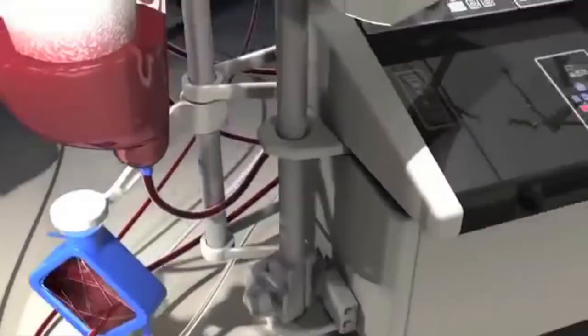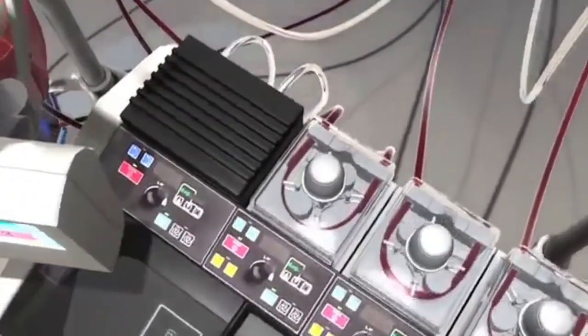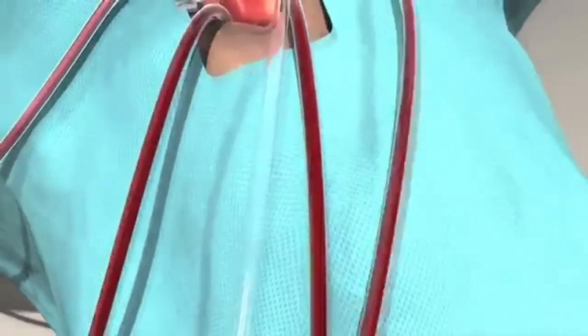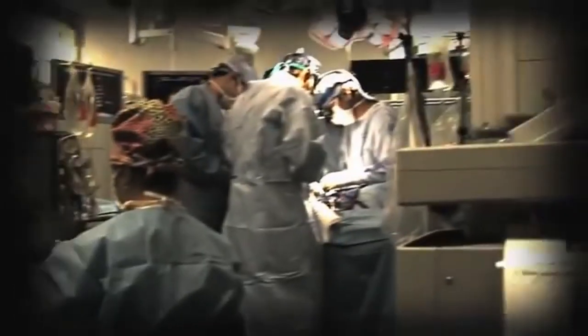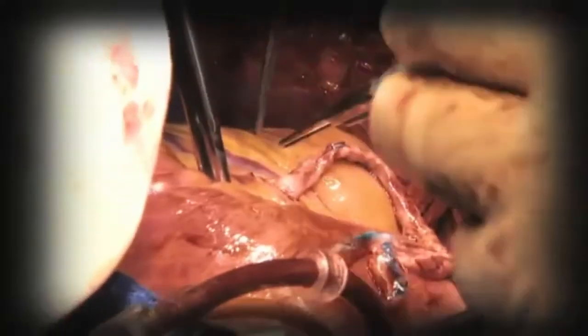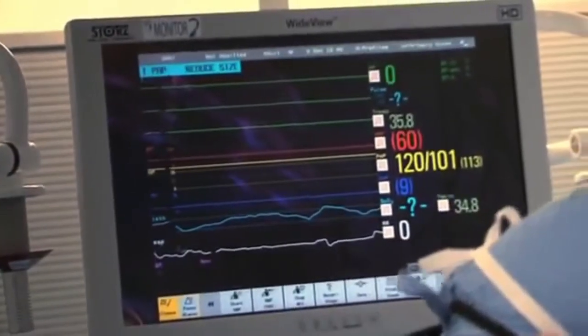The machine, which is operated by a trained and certified specialist called a perfusion technologist, also removes carbon dioxide and other waste products from the blood, and delivers anesthesia and medications into the recirculated blood. In some cases it cools the blood. Cool blood lowers the body's temperature, which helps to further protect the brain and other vital organs during surgery.